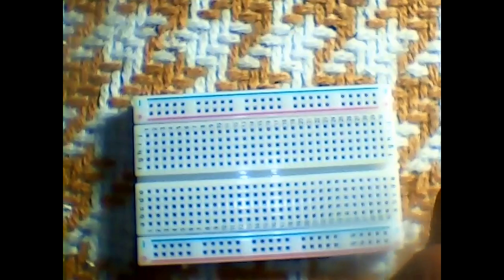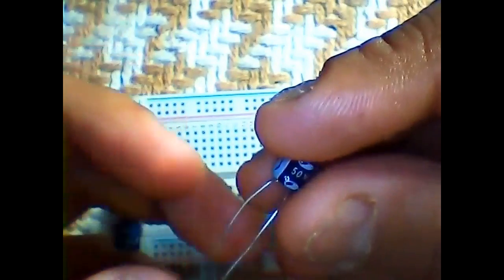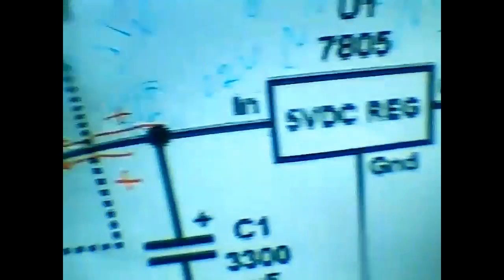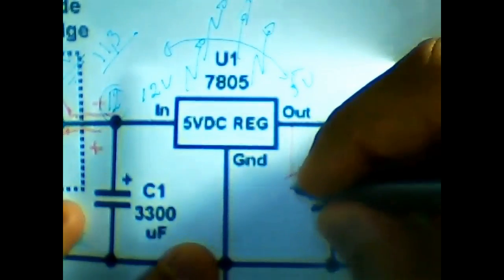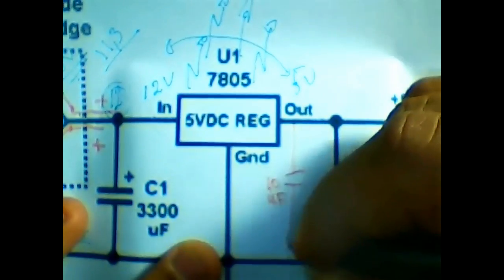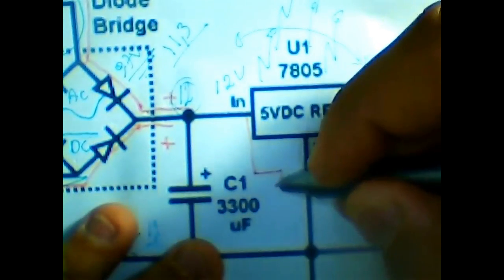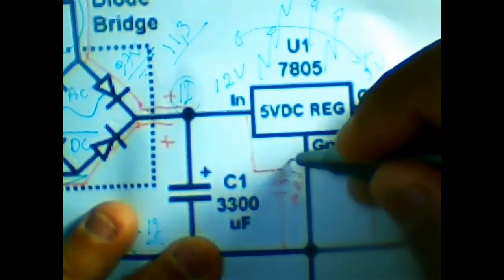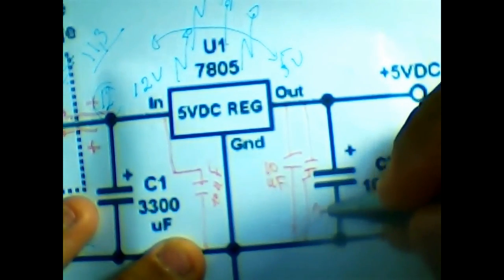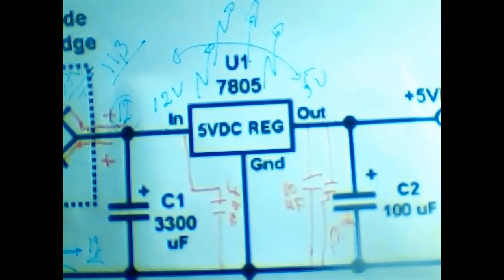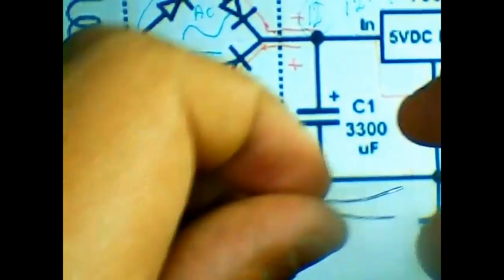Enough of that — let's make this schematic. Here I have a sample breadboard. What you're going to need are capacitors. Here I have 10 microfarads. You can add 10 microfarads here, and from the same point here you can add another 10 microfarads, and also a 0.1 microfarad ceramic capacitor.